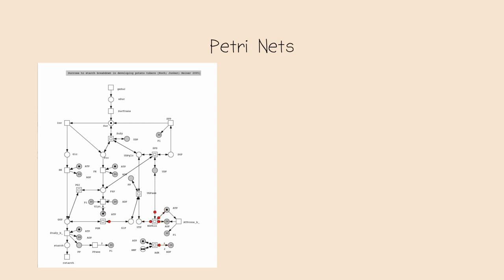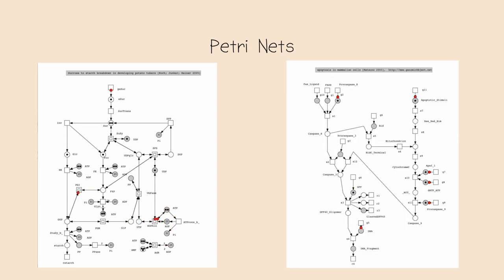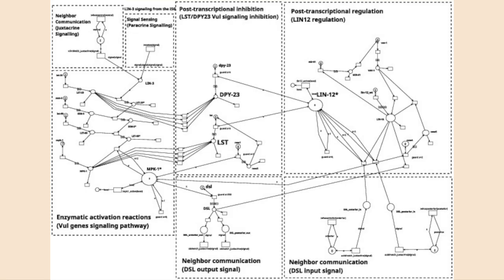In practice, these Petri nets are used to simulate starch breakdown in potatoes, simulating apoptosis in mammalian cells and many other reactions in a software called Snoopy, developed at the Brandenburg University. You can imagine creating much more complex machines like this, modeling the human brain. But again, the implementation does not really matter here.